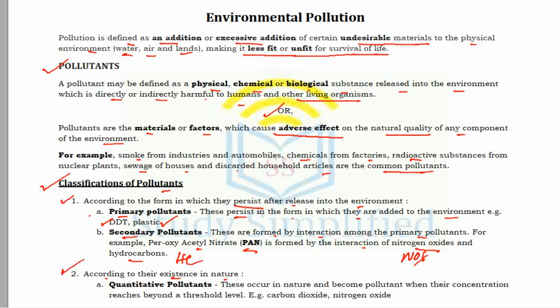Another criteria is according to their existence in nature, which gives us quantitative pollutants. Quantitative pollutants occur in nature and become pollutants when their concentration rises beyond a threshold level — such as carbon dioxide and nitrogen dioxide. For example, excessive release of carbon dioxide is causing global warming.